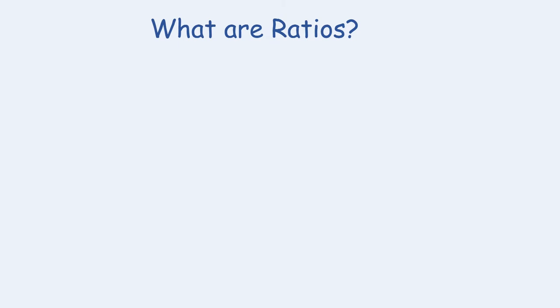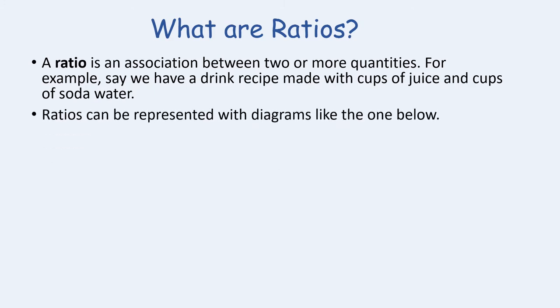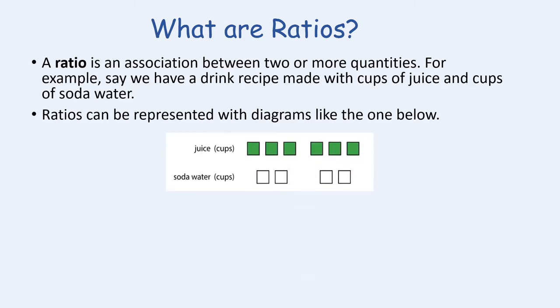Let's review ratios. A ratio is an association between two or more quantities. For example, say we have a drink recipe made with cups of juice and cups of soda water. Ratios can be represented with diagrams like the one on your screen — juice and soda water represented with green and white squares.